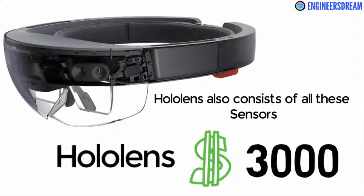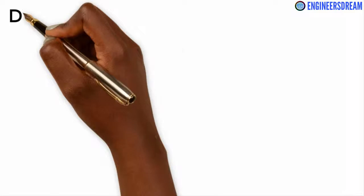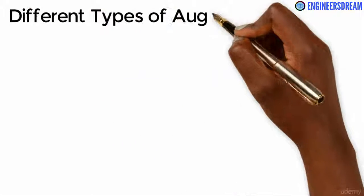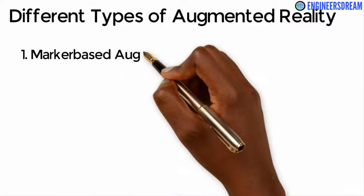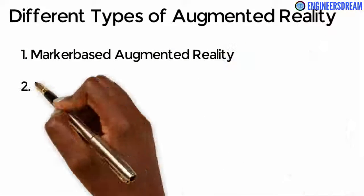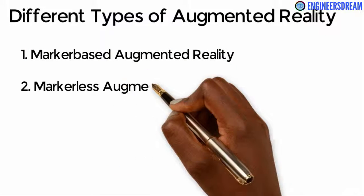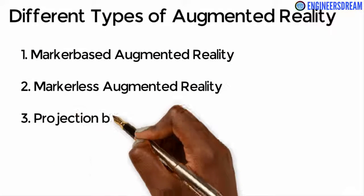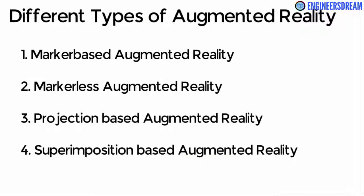After explaining augmented reality in simple terms, let's look at the different types of augmented reality. Augmented reality can be classified into four types: marker based augmented reality, marker less augmented reality, projection based augmented reality, and superimposition based augmented reality.